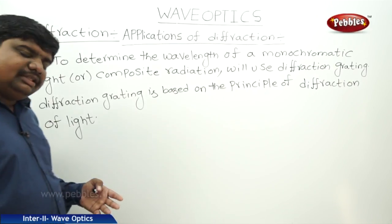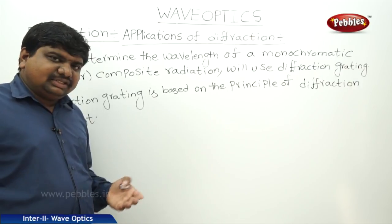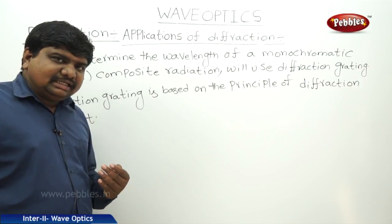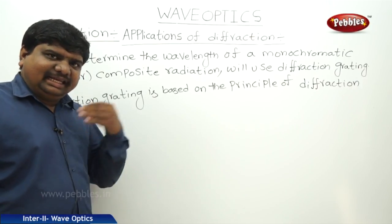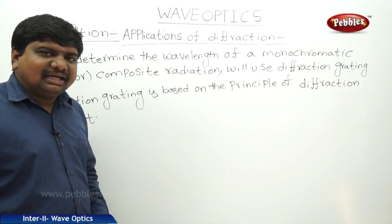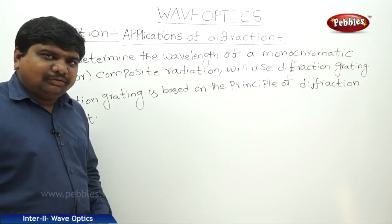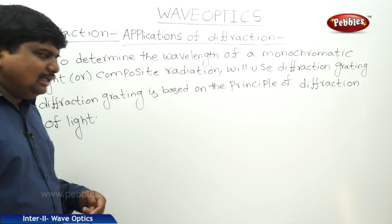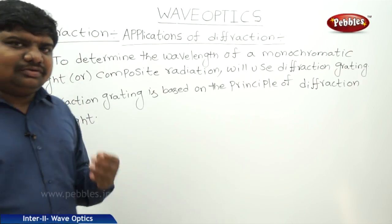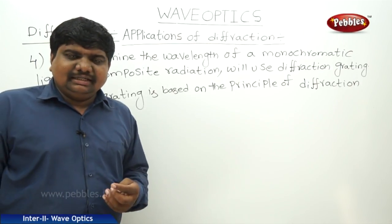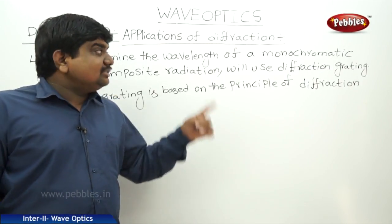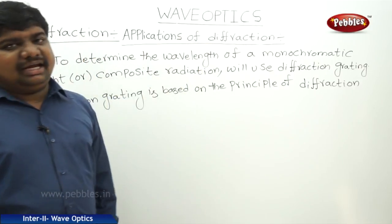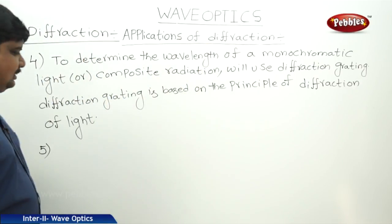If you want to find out ulcers or tumours in the human body or in any intestine part, we are using the ultrasound technique. This ultrasound technique is based on the diffraction of light.